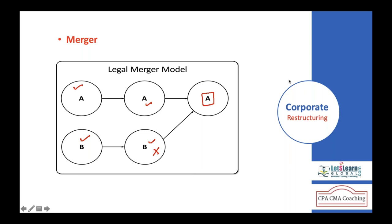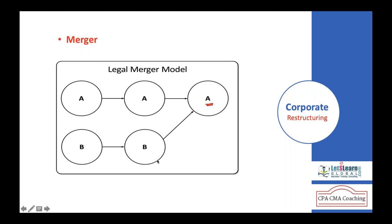This means the shares of the absorbed company — say Company B — will be delisted from the stock exchange. Company B's operations will be closed down. All resources will be transferred to Company A. Employees may get employment in Company A or may be compensated. Investors may be compensated or given Company A shares. Suppliers, bankers, and other stakeholders will be settled accordingly. In a merger, one company survives and the merged companies cease to exist entirely.